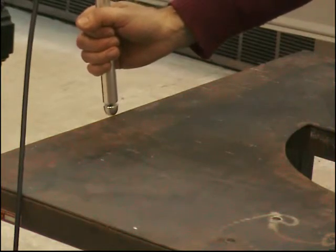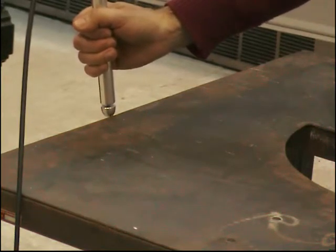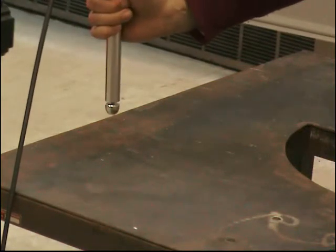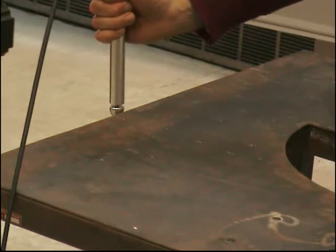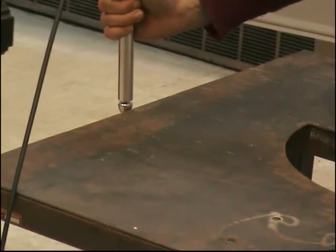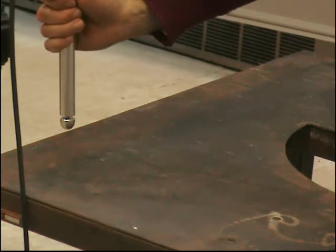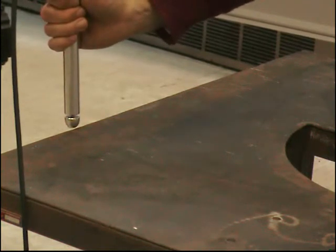In fact, when the tool touches the table surface, the impedance controllers cannot distinguish between the force exerted by the human operator and the contact force. As a consequence, they react by moving the robot back so that the contact forces disappear.